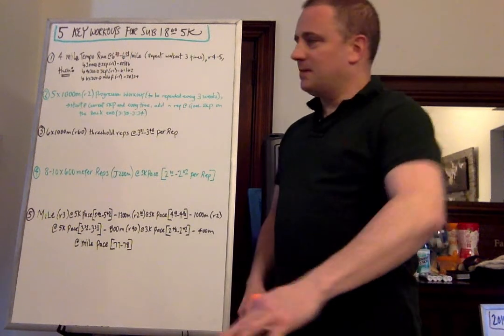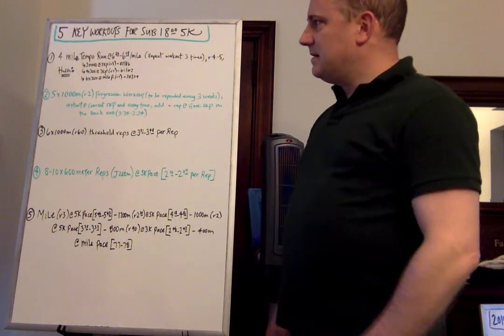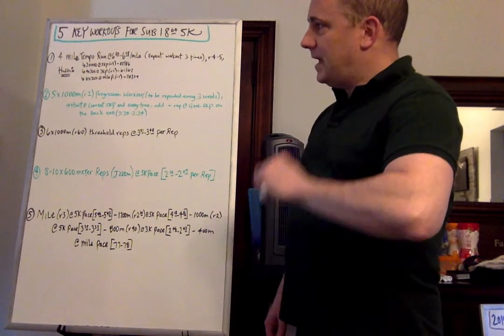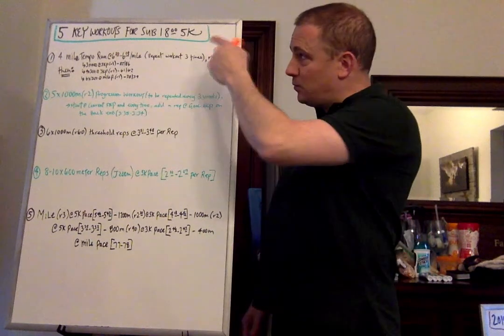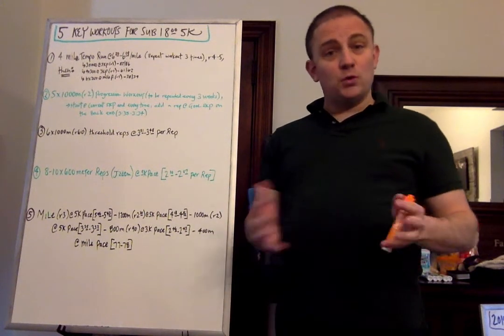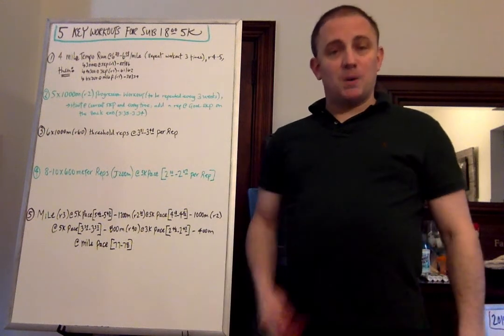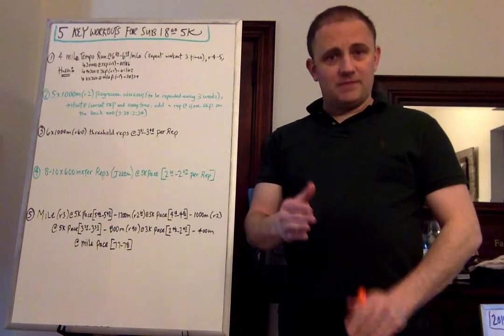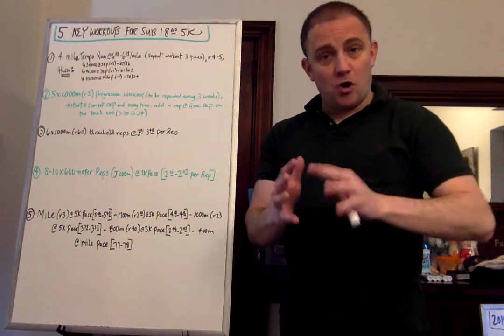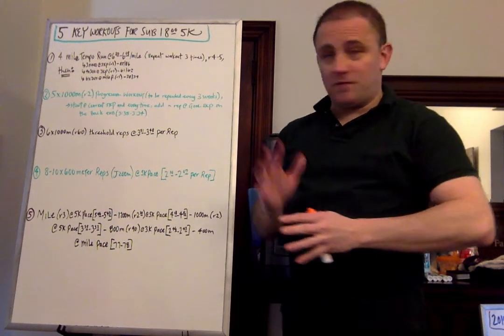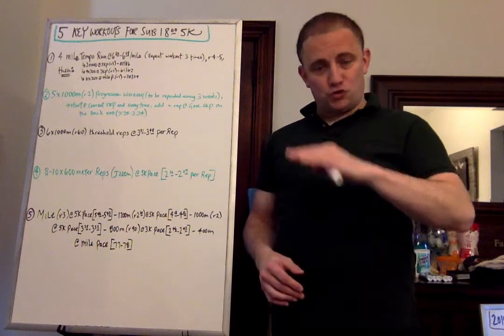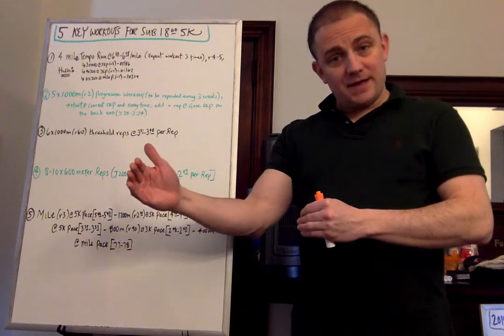So let's get to these workouts, and these are all workouts that I have used for men and women. Number one, a four-mile tempo run. Tempo runs are a staple, especially if you're training for a 5K. This is a workout that I would incorporate three times over a 12-week training program. And each time, the goal - these training paces are the training paces that are commensurate with a sub-18 5K. So they're training paces you want to progress towards.